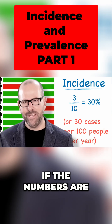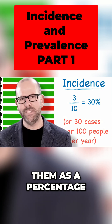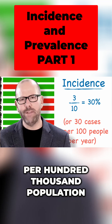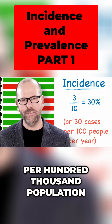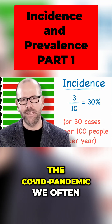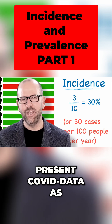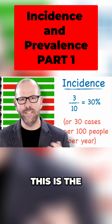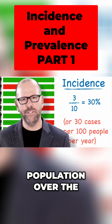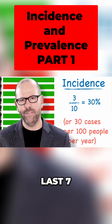If the numbers are very small, we might not present them as a percentage, but rather as per 100,000 population. You would have heard during the COVID-19 pandemic, we often presented COVID-19 data as the incidence per 100,000 population over the last seven days.